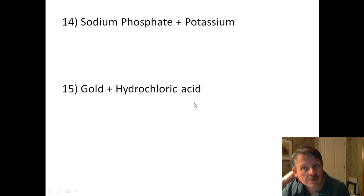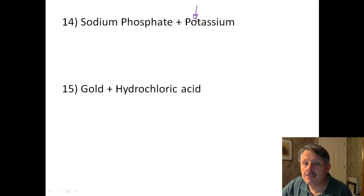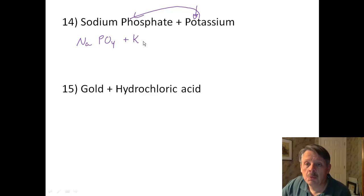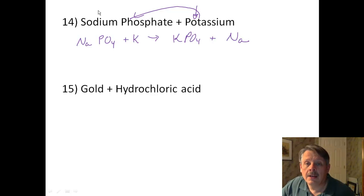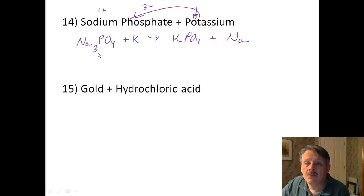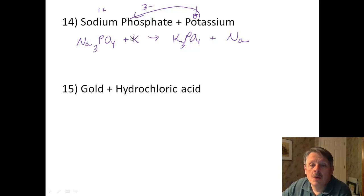Number 14: sodium phosphate and potassium. Potassium is higher on the activity series than sodium, so potassium replaces sodium. Sodium is 1+, phosphate is 3−, so sodium phosphate is Na₃PO₄. Potassium is also 1+, so potassium phosphate is K₃PO₄. I need a couple of coefficients: 3 potassiums on the left and 3 sodiums on the right to make everything balanced.